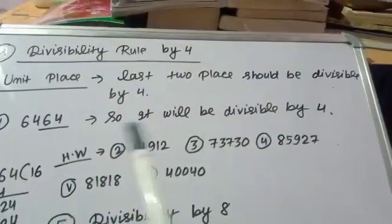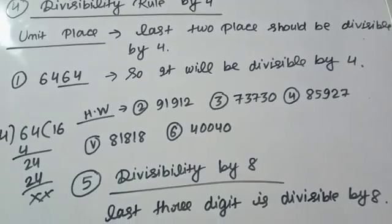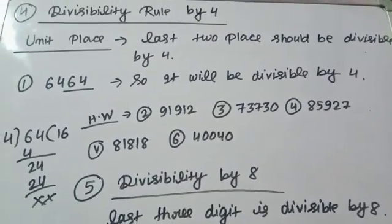So this chapter is all about divisibility rules. In some cases last two digits, in some cases last three digits. You need to check like this only.